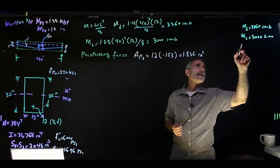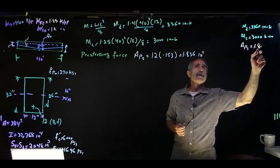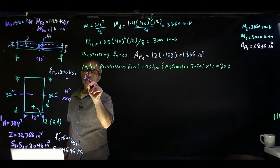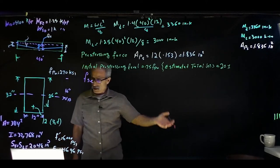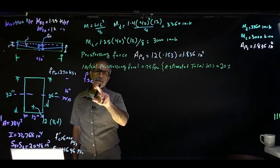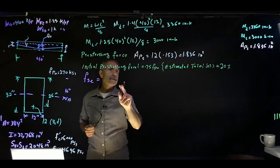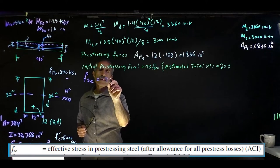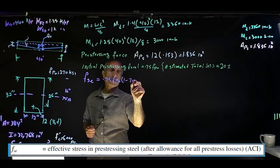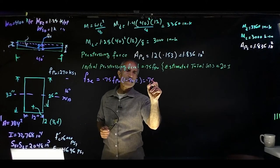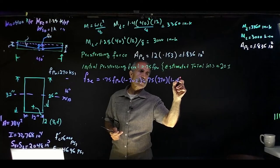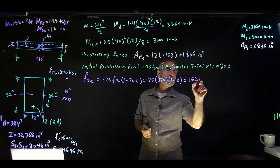Now calculate fse, the effective stress in the prestressing steel after losses. That equals 0.75 × fpu × (1 − loss fraction). With fpu = 270 ksi and 20% losses: fse = 0.75 × 270 × (1 − 0.2) = 162 ksi.